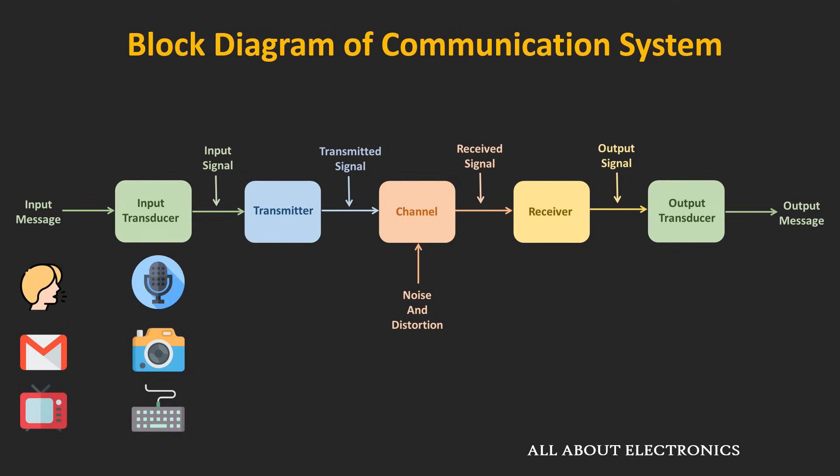For example, using a microphone our voice can be converted into an electrical signal, and using a camera, pictures or motion can be converted into a digital signal. After the transducer, the electrical signal we have is known as the input signal. The next block after the transducer is the transmitter.